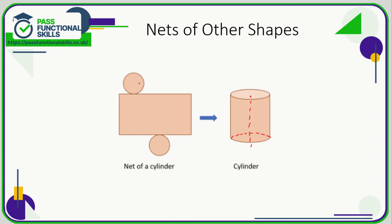So there needs to be a circle top and bottom. The circle can be anywhere on the top, and this circle can be anywhere here, and we still have the correct net of a cylinder.